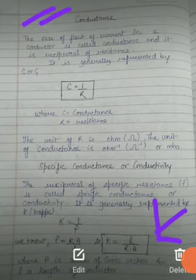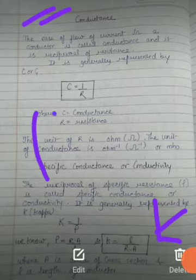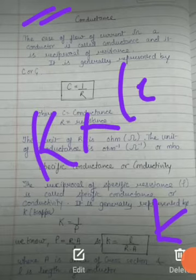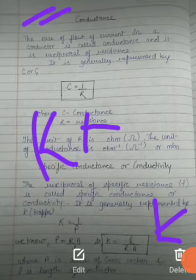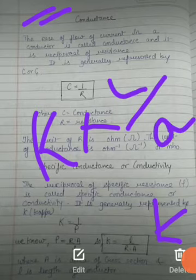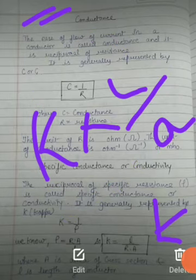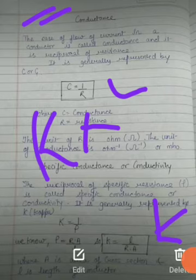So specific conductance, or conductivity, equals conductance multiplied by the cell constant. If we call conductance g or k, then specific conductance equals conductance times cell constant. The cell constant is l/a, and specific conductivity is the product of these two.